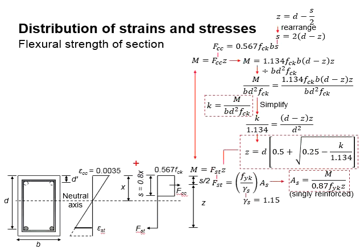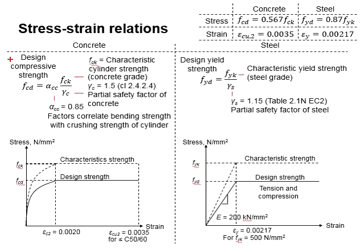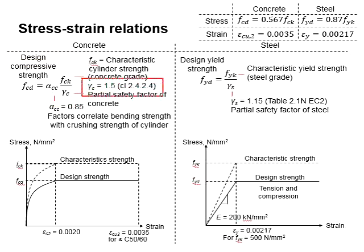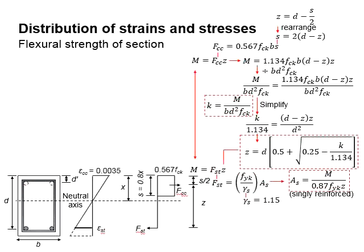From the compressive stress, the maximum allowable stress in the section is the design compressive stress of the concrete. It is calculated based on these equations, as a function of the partial factor of safety of concrete, which is equal to 1.5, and the factor correlating bending strength to crushing strength of the cylinder, which is equal to 0.85. Substituting the relevant values gives 0.567 fck.